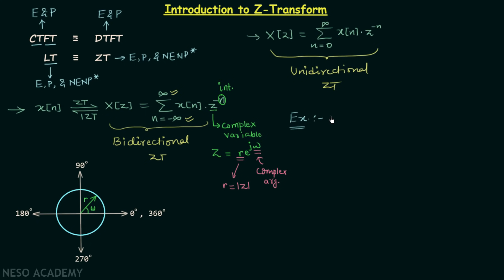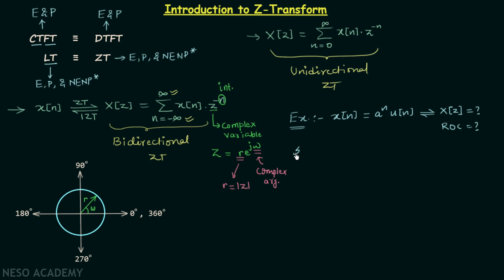In this example, the discrete time signal x[n] is equal to a^n multiplied by u[n], and we are required to calculate the corresponding Z-transform along with the region of convergence. Let us move on to the solution of this example problem.